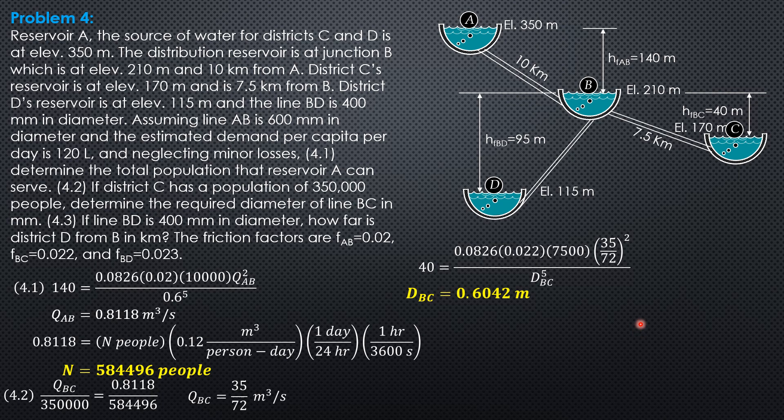And, finally, for the length of BD, head loss is given. Then, we can compute the discharge. Q_AB 0.8118 equals Q_BC plus Q_BD. So, Q_BD therefore is 0.8118 minus 35 over 72.